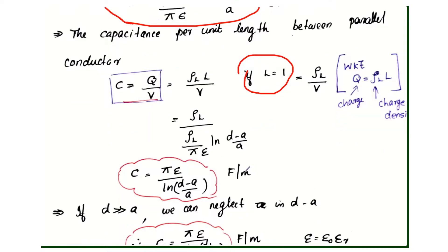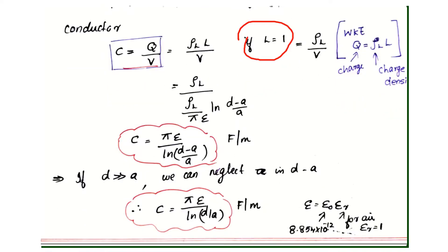Rho_l cancels out. Therefore, C equals pi epsilon divided by ln(D minus A by A). This is the capacitance due to the transmission line.